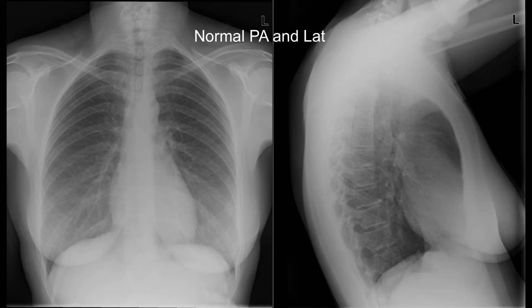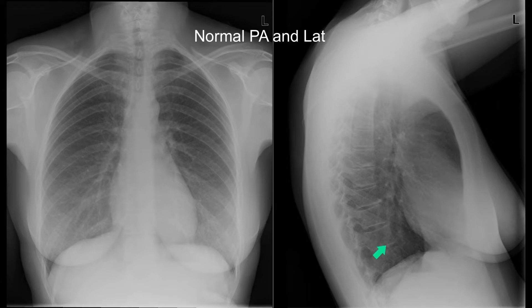On the lateral view, the important thing to note is that in normal patients, the density of the spine reduces as you go from top to bottom. This is because there is more lung to go through before hitting the cassette plate.